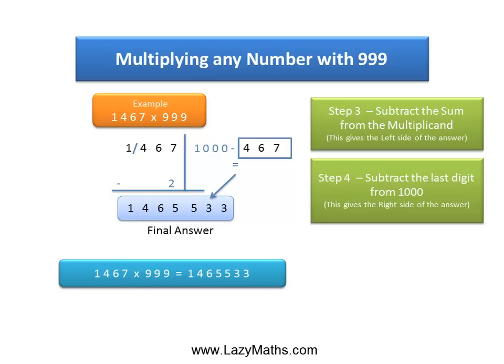So 1467 times 999 equals 1465533. And that's it. Thank you.